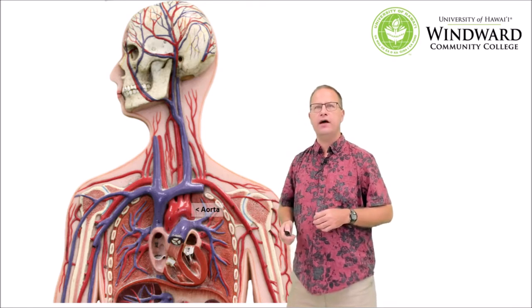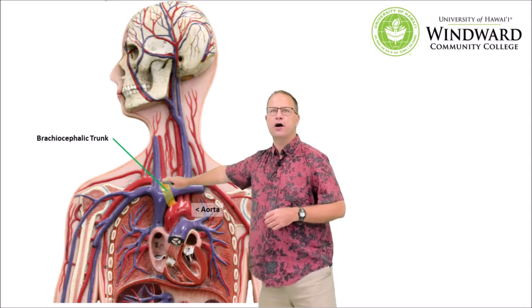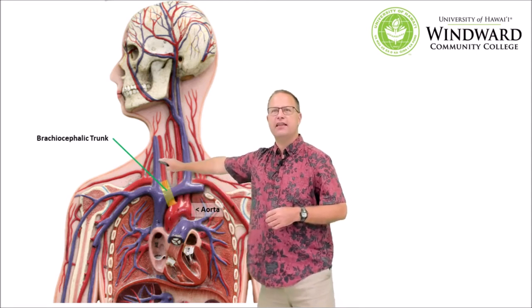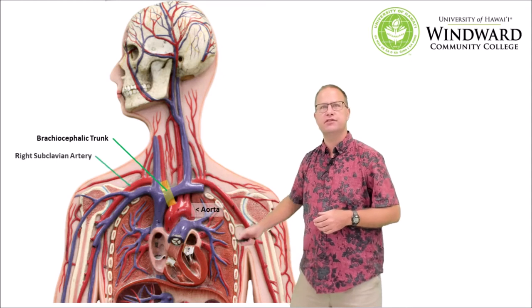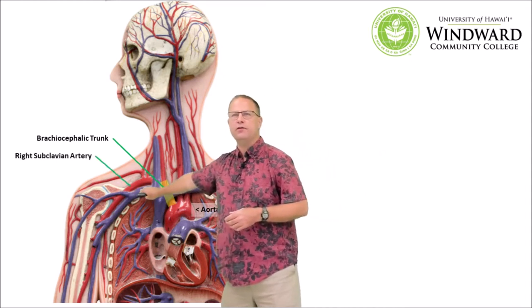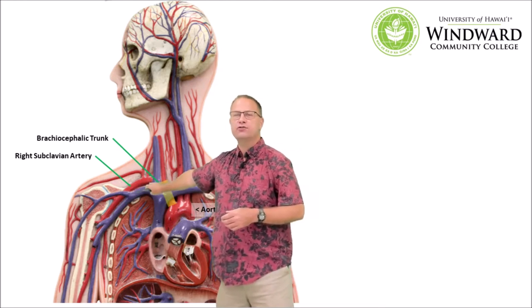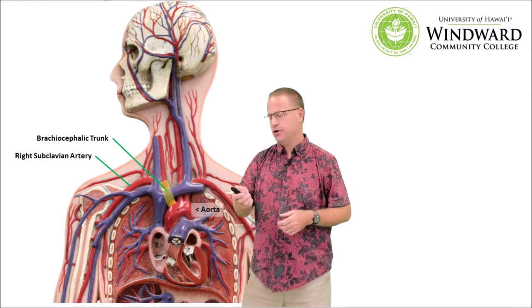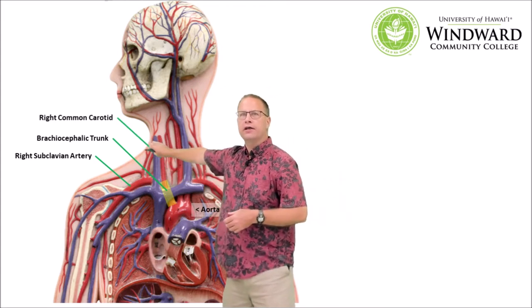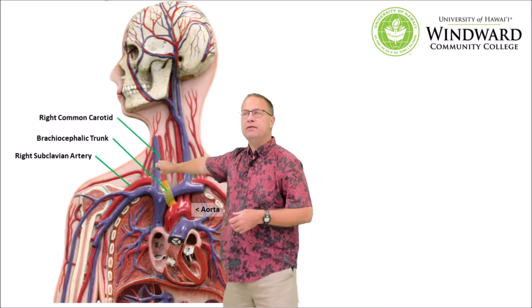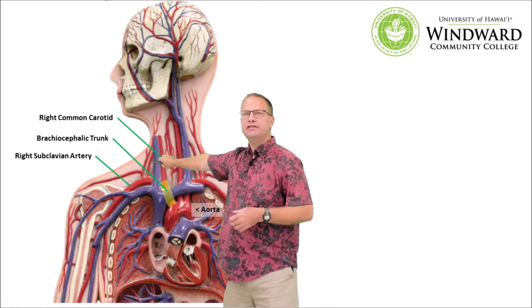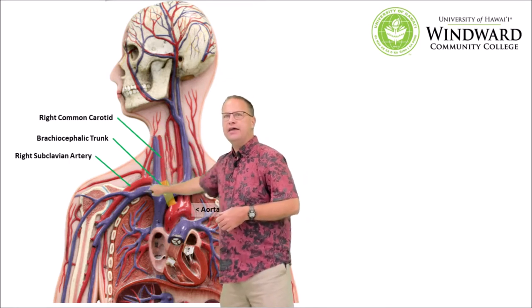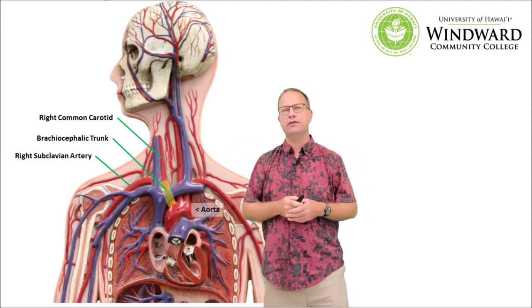On the right-hand side we have something called a brachiocephalic trunk — brachio means arm and cephalic means head. This trunk gives rise to branches: one branch goes to the arm and is initially called the subclavian artery, named because it travels below the clavicle. The other branch of the brachiocephalic trunk is the common carotid artery. Common carotid means it hasn't branched yet — there will be an internal and external carotid later. So the brachiocephalic trunk gives rise to one vessel going to the head and one initially called the subclavian artery going to the arm.